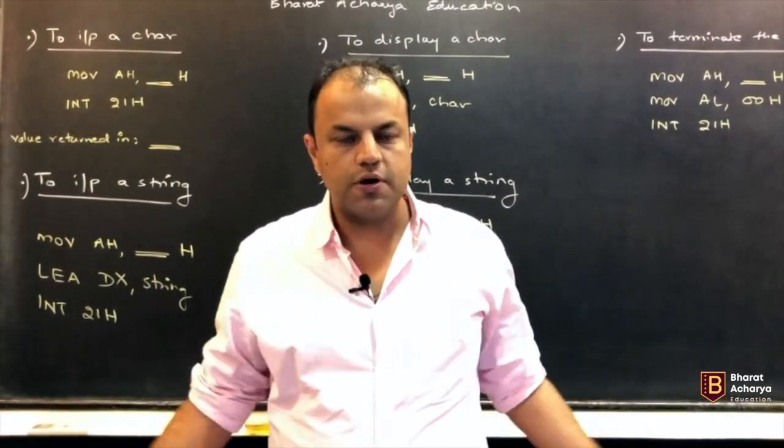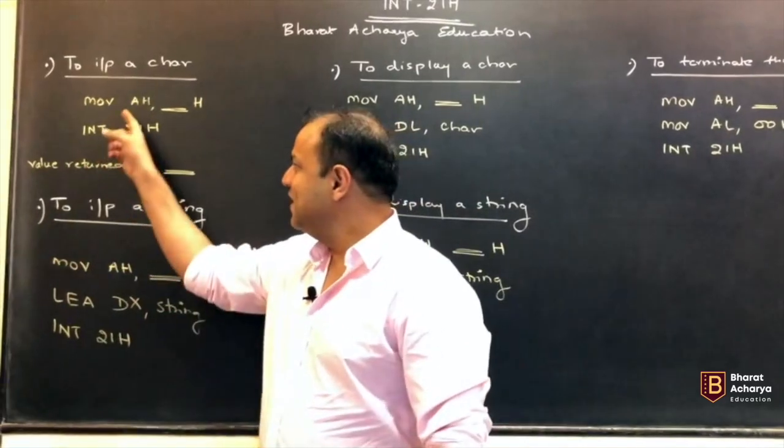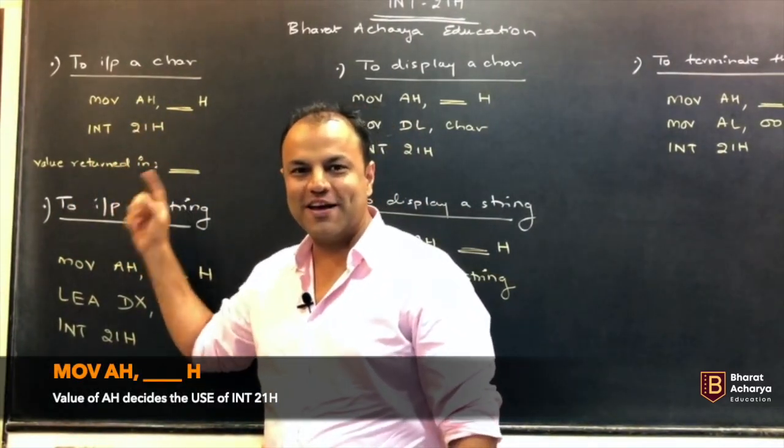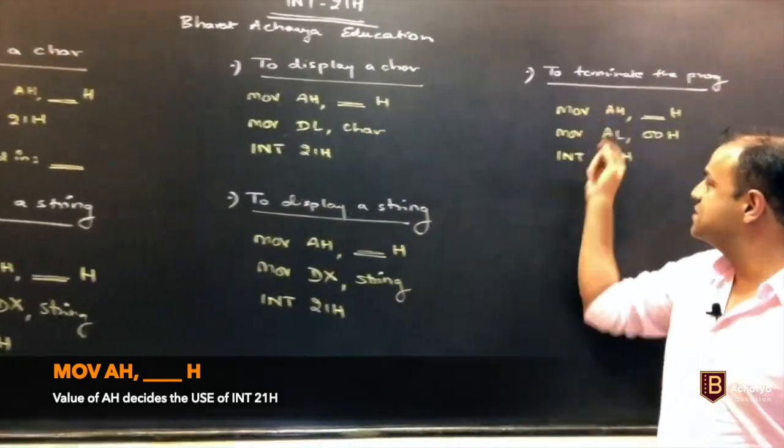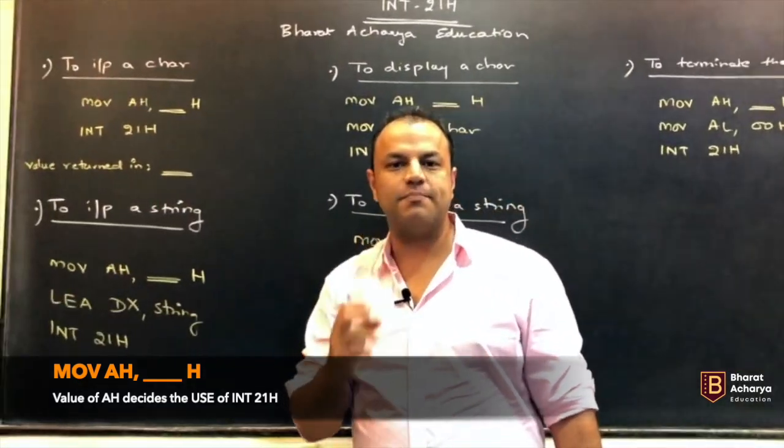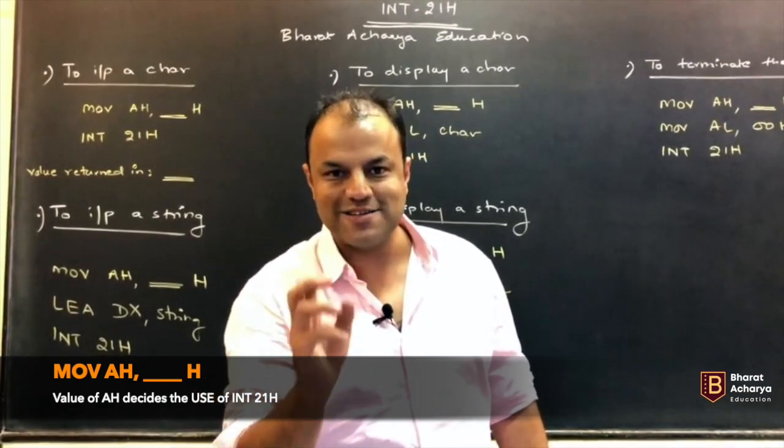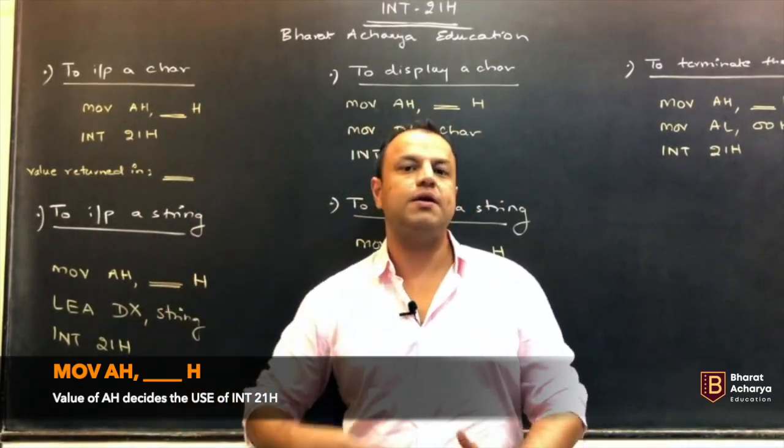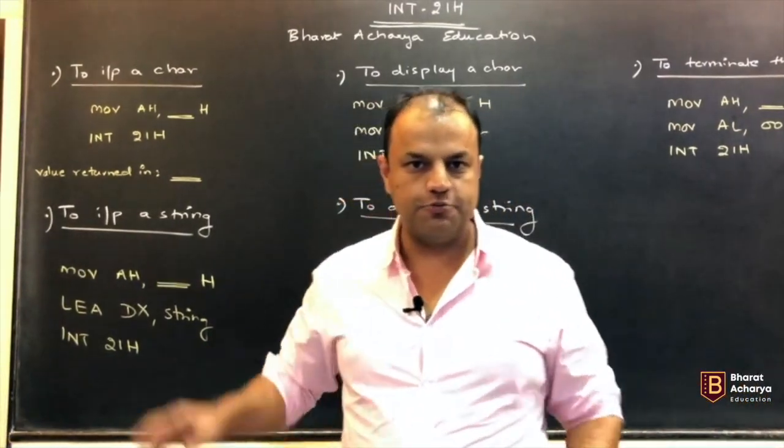Which function do you want to use? How do you decide that? You're writing INT21 in every case. The value that you put in AH before invoking INT21. Can you see? I have left that blank. Something else will come in each case. So, depending upon the value that you put in AH, that acts as a parameter. Depending upon the value that you put in AH and invoke INT21, INT21 will show you the appropriate behavior.